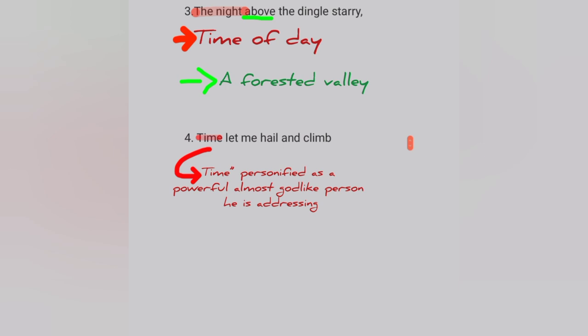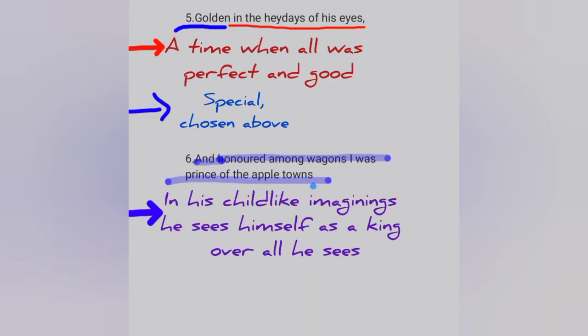In line number three, we get the time of day and where we are — we are in a forested valley. Line four: 'Time let me hail and climb' — time is personified as a powerful, almost God-like person he is addressing. Line five: 'golden in the heydays of his eyes' — the interpretation is a time when all was perfect and good. Line six: 'And honored among wagons, I was prince of the April town' — in his childlike imaginings, he sees himself as a king over all he sees.